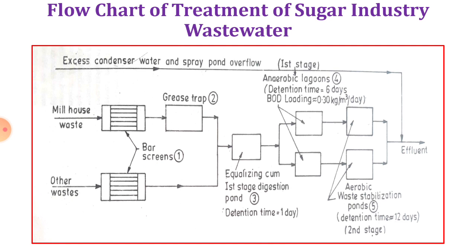After the grease trap, all wastewater passes through an equalization tank, also called the first-stage digestion pond, with a detention time of one day. After equalization, the water passes through an anaerobic lagoon for six days, with a BOD loading of 0.3 kg per cubic meter per day. Following anaerobic treatment, wastewater goes to aerobic waste stabilization ponds for 12 days — this is called the second stage.